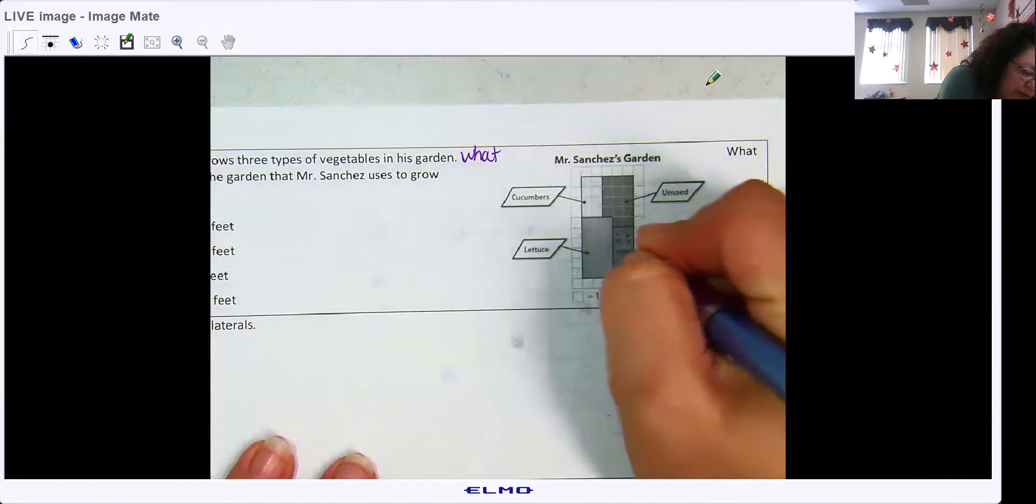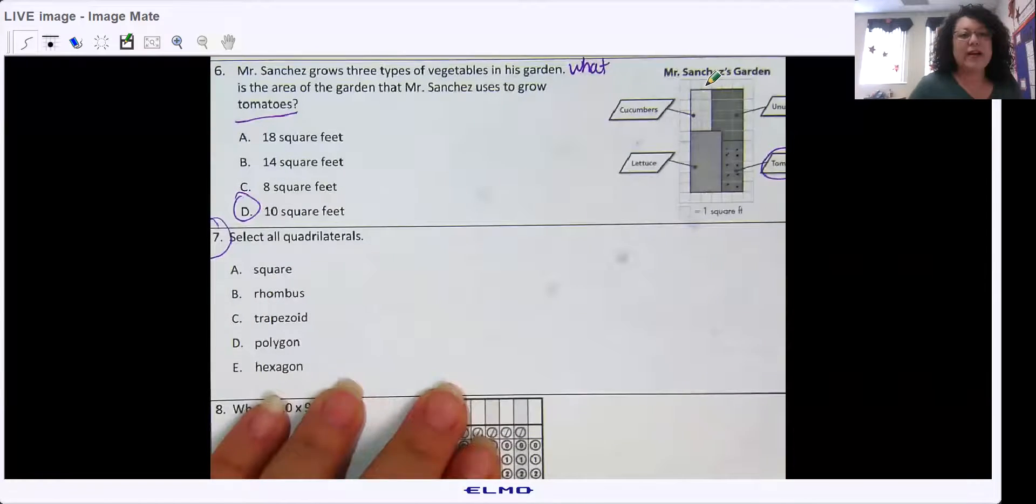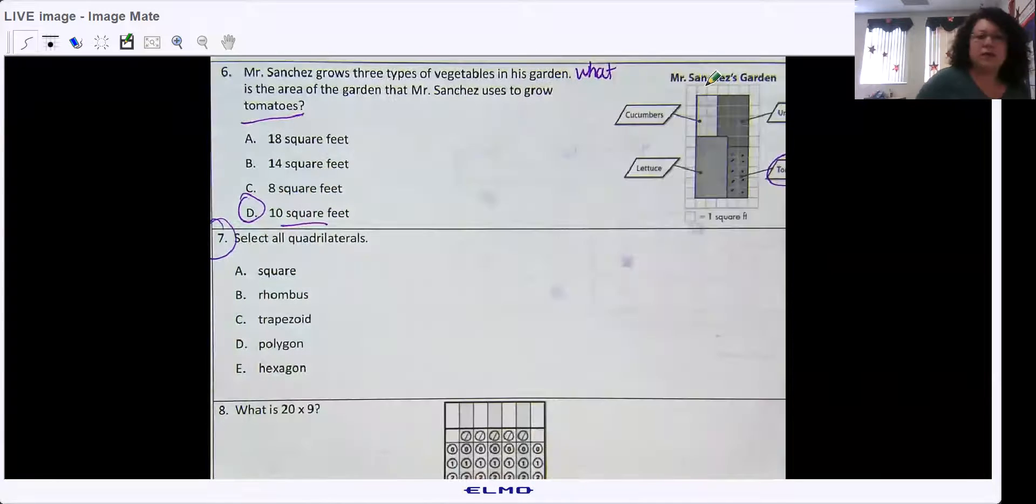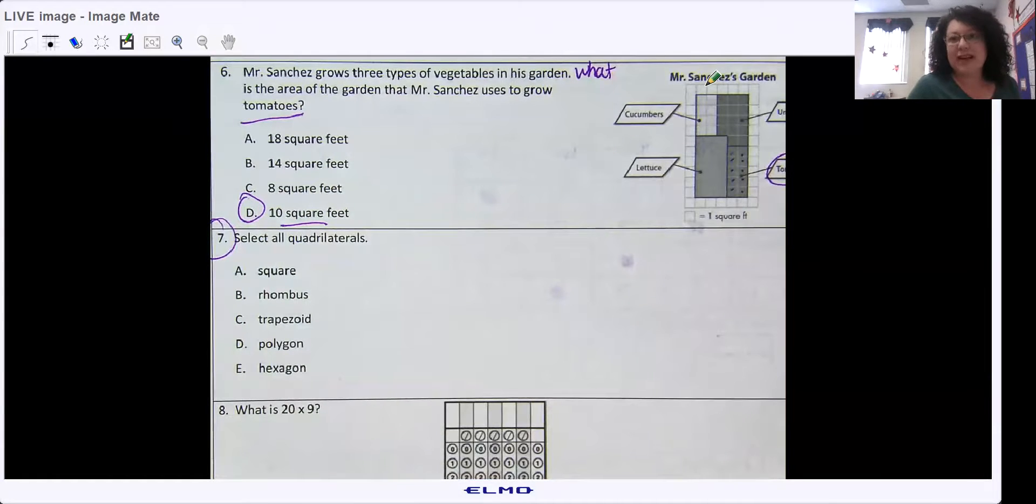All right, so we would find it's asking about tomatoes. There's tomatoes. So then we would count our squares. One, two, three, four, five, six, seven, eight, nine, 10. 10 square feet. Remember, you got to have that word square when you're answering for area.